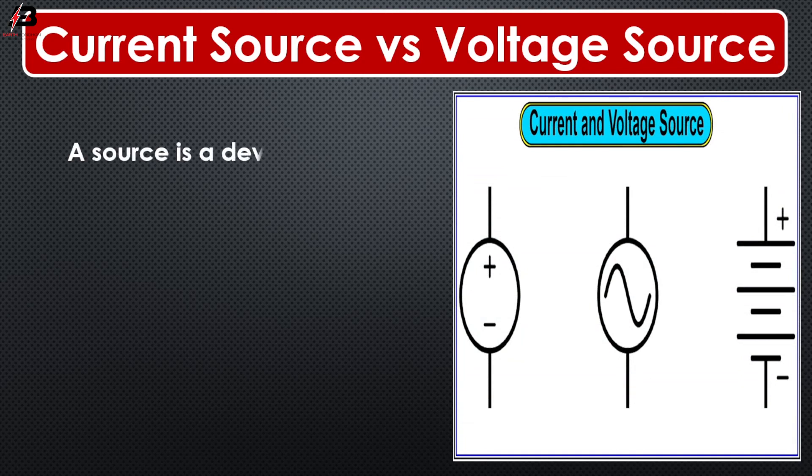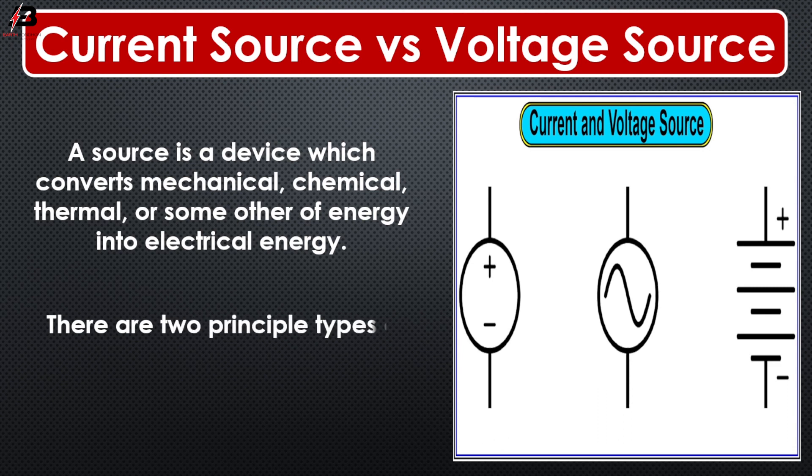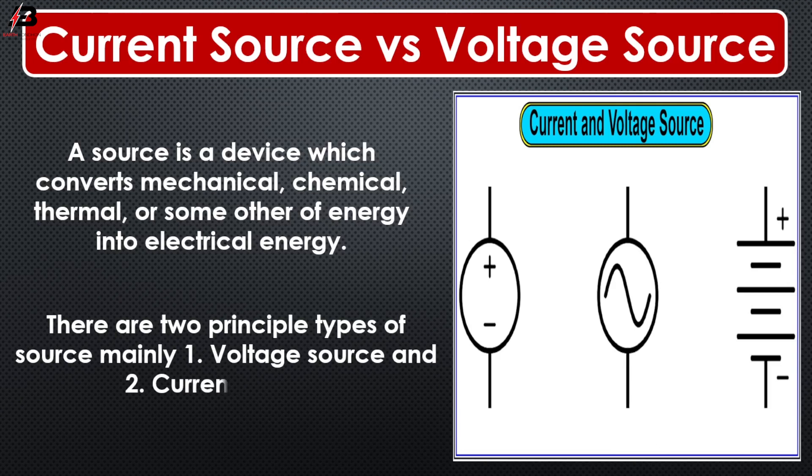A source is a device which converts mechanical, chemical, thermal, and some other forms of energy into electrical energy. There are two principal types of sources mainly: number one, voltage source, and number two, current source.